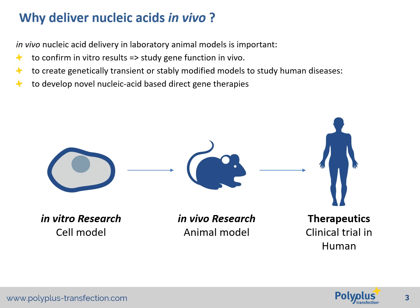Why deliver nucleic acids in vivo? In vivo nucleic acid delivery is performed in live animals to confirm in vitro results and/or to study gene function in vivo. Transient in vivo delivery of nucleic acid is a useful tool that offers a complementary or alternative method to generating a transgenic animal model. It can already allow you to generate data on the effect of silencing of the gene of interest or overexpression of a wild-type or mutated gene in the animal model.